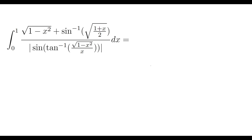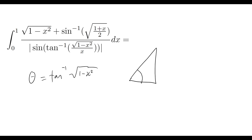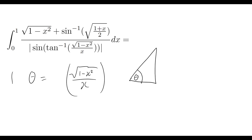Let's think about what an inverse tan function represents. All it finds us is an angle. So let's say some angle theta is equal to tan inverse of the square root of 1 minus x squared all over x. That means this angle is theta. Now, if we take the tangent of both sides of this equation, that arc tan will disappear, and we simply have tan theta equals square root of 1 minus x squared over x. Going back to SOHCAHTOA, we know tan of theta equals opposite over adjacent.